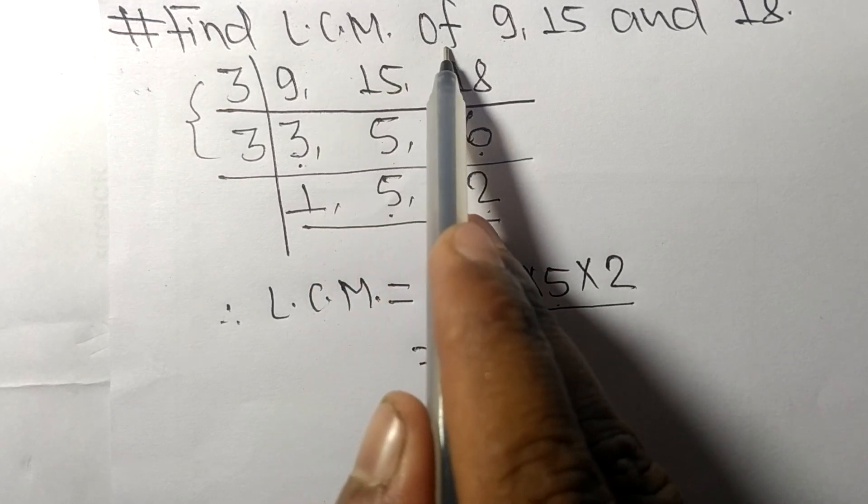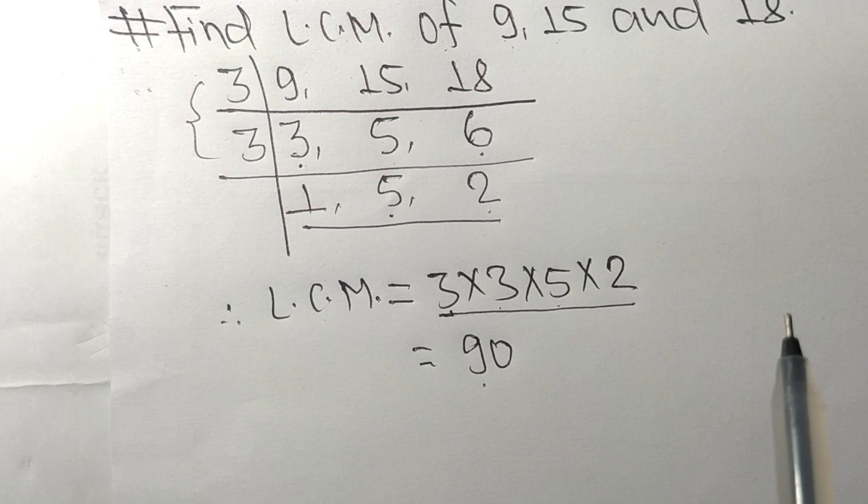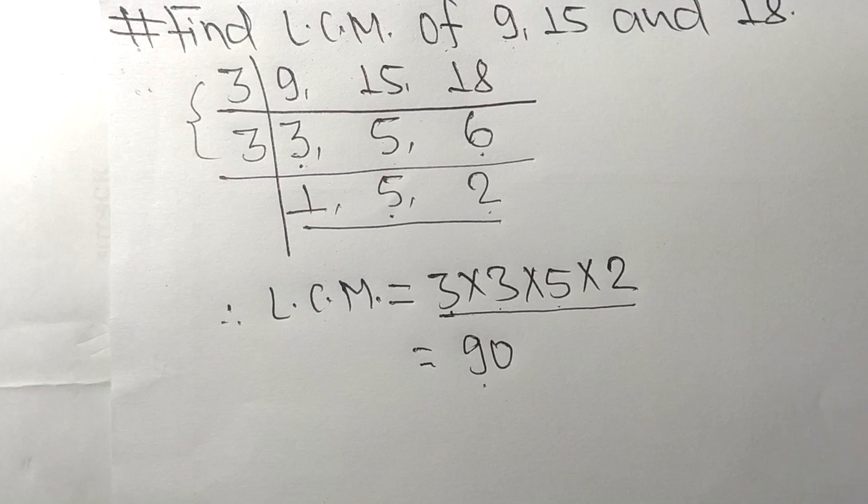So by multiplying all these numbers we got 90, so 90 is the LCM of 9, 15 and 18. So this much for today and thanks for watching.